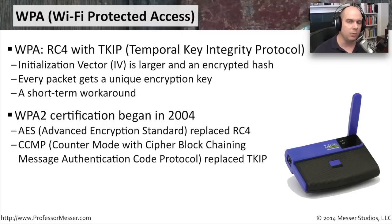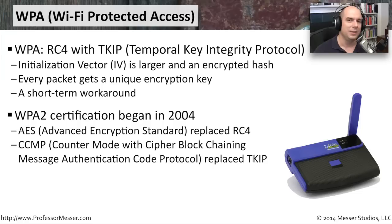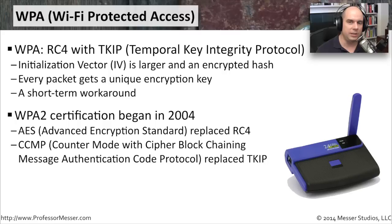With WPA2, the RC4 component was replaced with Advanced Encryption Standard (AES), and CCMP — Counter Mode with Cipher Block Chaining Message Authentication Code Protocol — was added, replacing TKIP. So the RC4 and TKIP combination was replaced with the stronger AES and CCMP.